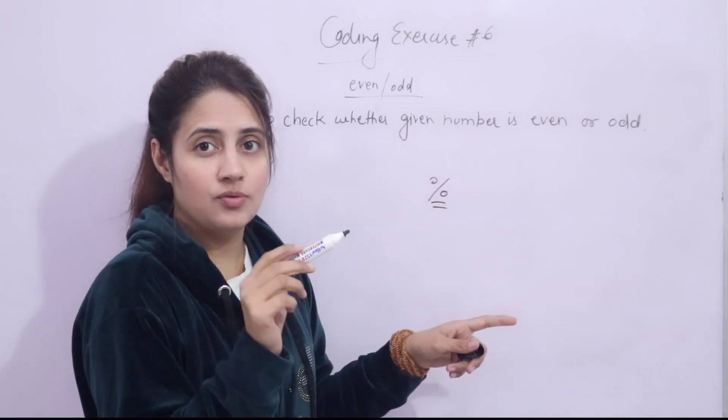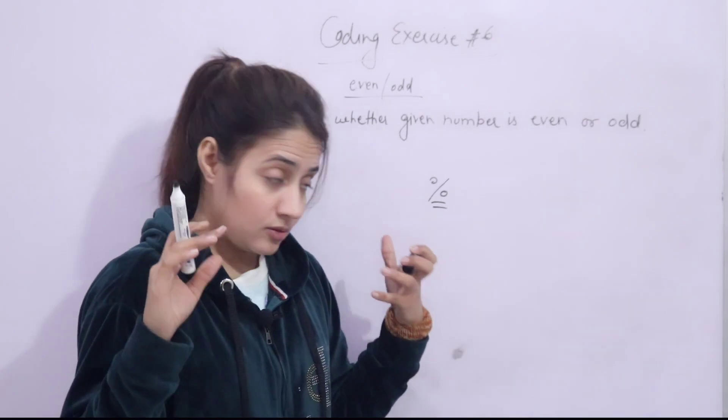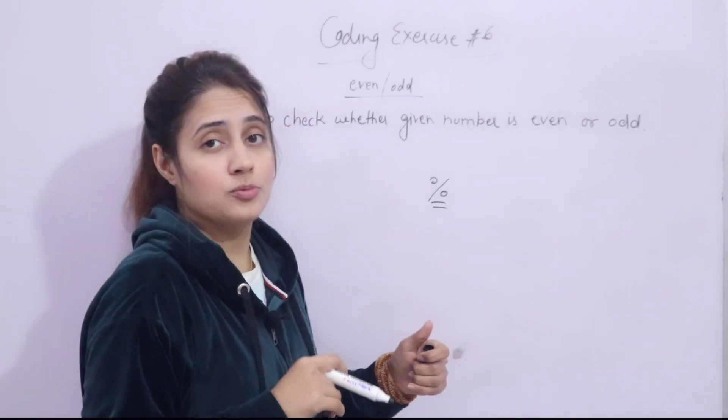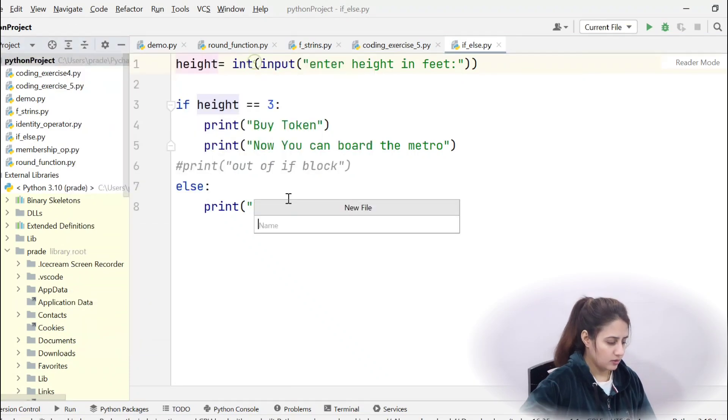You have to use this because it will give remainder and obviously you need to check the remainder. If the number is divided by 2 and there is no remainder, then that is even number. So pause the video and try out this program. Let's create a new file here, I will be writing coding_exercise_6.py.